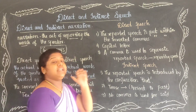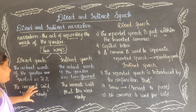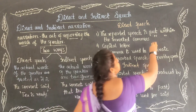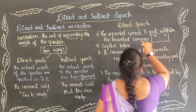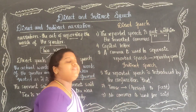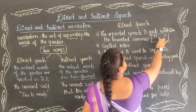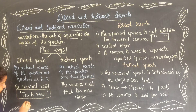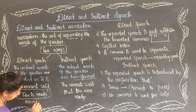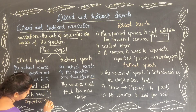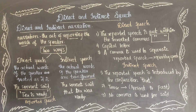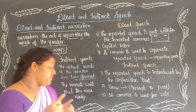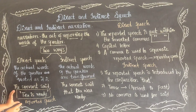In direct speech, the reported speech is put within inverted commas. The recorded speech is put within the inverted commas. There are no changes in the words of the reported speech.